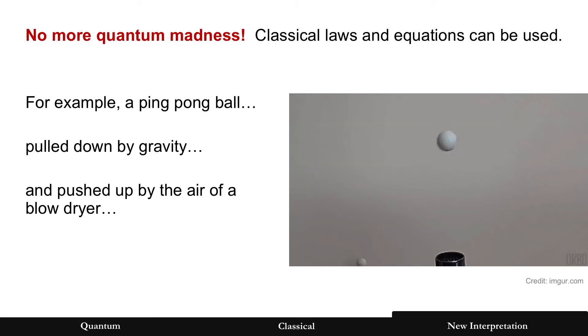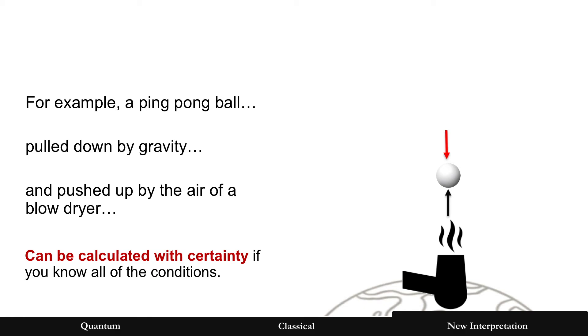So no more quantum madness. The nice thing about this is that everything that was described, classical laws can be used in equations. And I'll give an example, a ping pong ball. Because a ping pong ball is pulled down by gravity. That's one force. But the second force is pushing it up, the air of a blow dryer. Kind of wobbles around there. But there is a force and it can be calculated and it can be calculated with certainty if you know all the conditions.